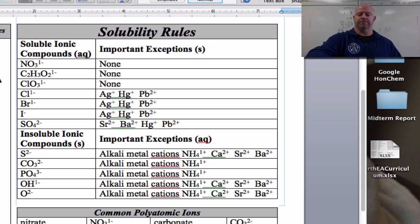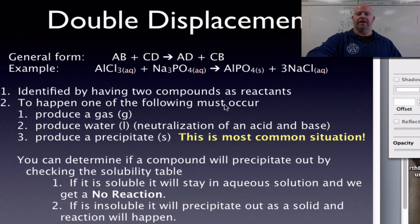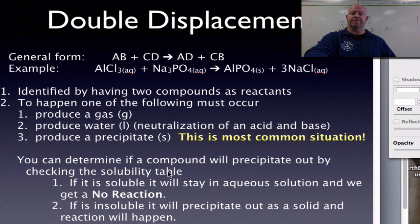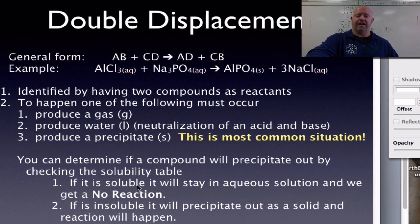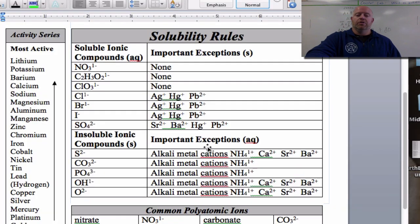If both products on the right-hand side are soluble, you get a no reaction. If one of your products is insoluble — a solid — then the reaction does happen. Let's keep our solubility rules table up and do some examples to work this out.